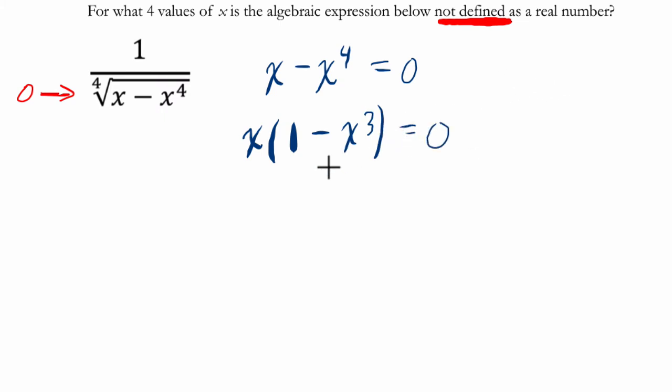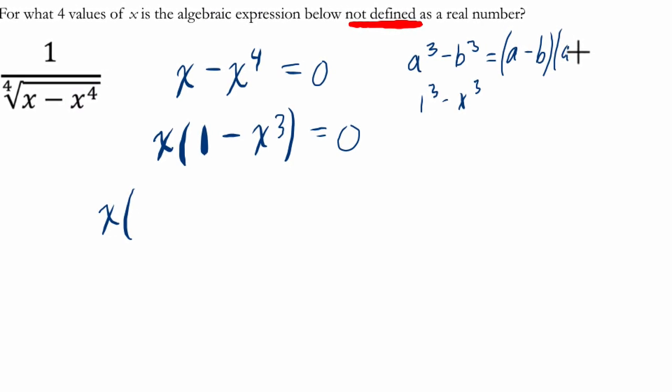Now, to go further, I'm going to recognize that this is the difference of cubes. The difference of cubes, if you have a cubed minus b cubed, in this case, we have 1 cubed minus x cubed. That would equal a minus b times a squared plus ab plus b squared.